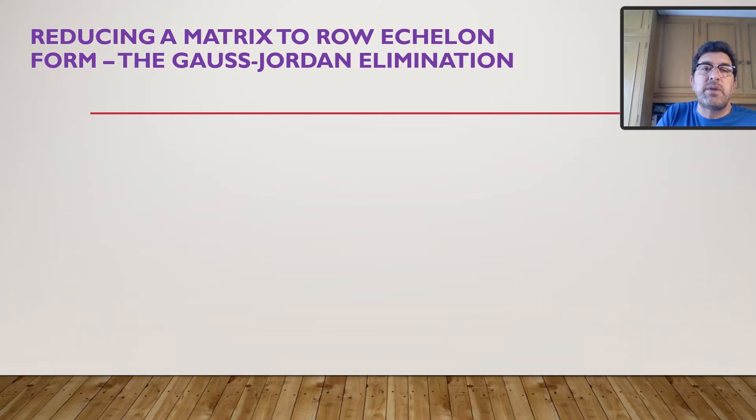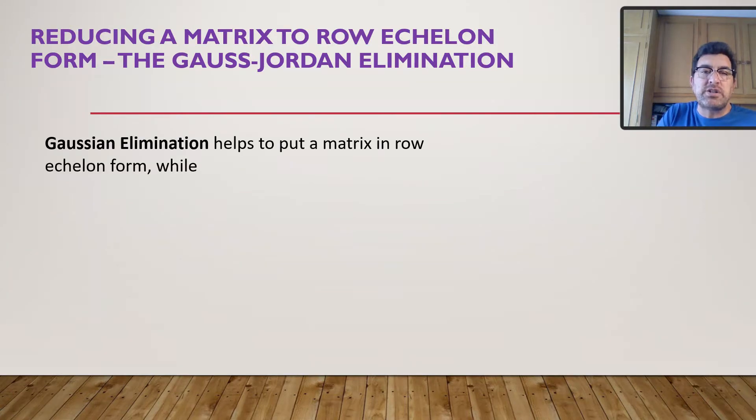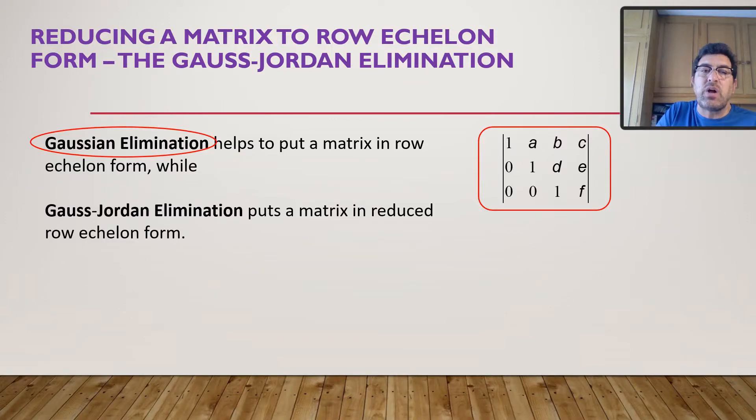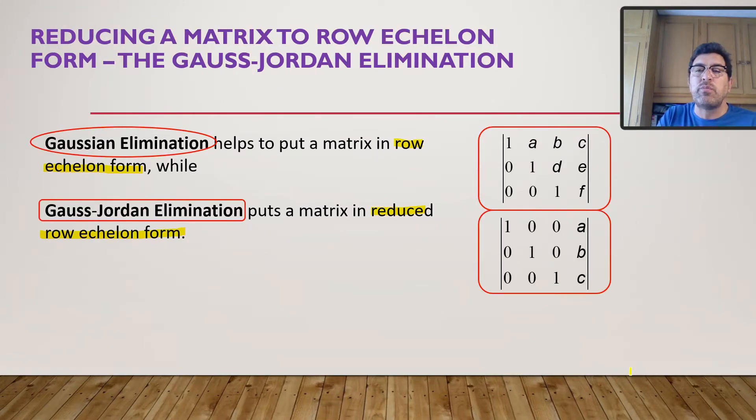Let's reduce the matrix to row-echelon form using Gauss-Jordan Elimination. What is it that we do? Gauss-Jordan Elimination helps to put a matrix in row-echelon form. So, what Gauss does, it puts it in row-echelon form. Then Gauss-Jordan takes over and puts it in reduced row-echelon form, which looks like that.